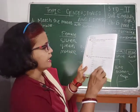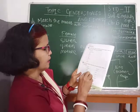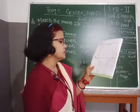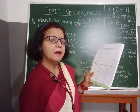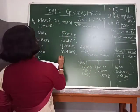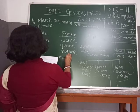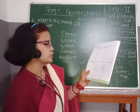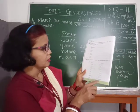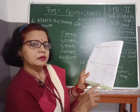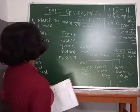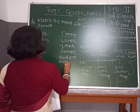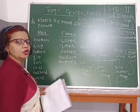Sir — sir's female is madam. M-A-D-A-M. Next: son — son's female is daughter. D-A-U-G-H-T-E-R.